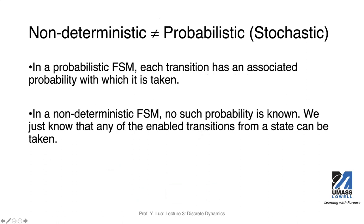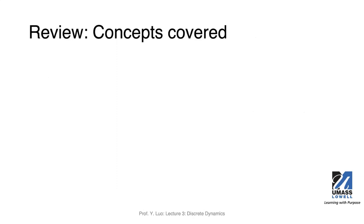One more thing: non-determinism is different from probabilistic or stochastic. In a probabilistic FSM, each transition has an associated probability — for example, 50% chance of going to state one and 50% chance of going to state two. For a non-deterministic FSM, no such probability is known.